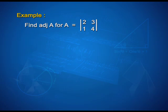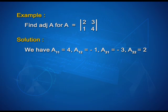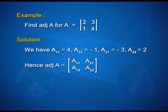Let us see how to calculate adjoint of A. Find adjoint of A for A equal to 2, 3, 1, 4. We have A_11 equal to 4, A_12 equal to 1, A_21 equal to minus 3, A_22 equal to 2. Hence, adjoint of A is given by the matrix A_11, A_21, A_12, A_22, that is 4, minus 3, minus 1, 2.